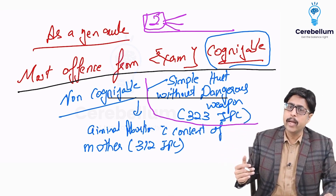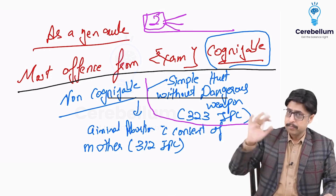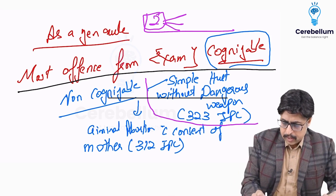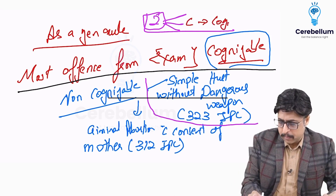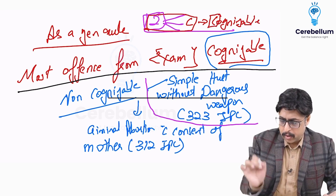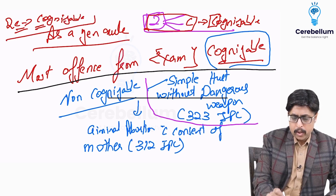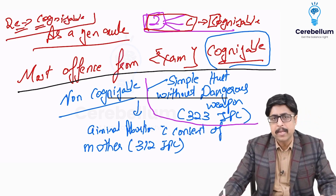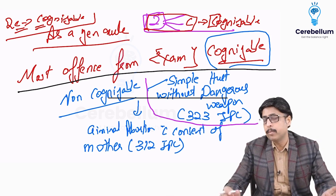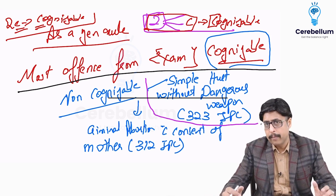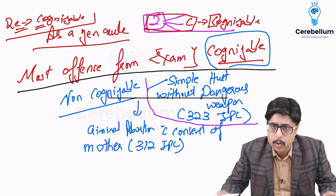In Section 2 CRPC, definitions are given under sub-sections labeled A, B, C, D, E, F, G, H — each covering something different. One easy mnemonic: Section 2C is for cognizable offense — 'C for cognizable.' In IPC and CRPC, we need to be smart and exam-oriented, making mnemonics and understanding what is important from the exam point of view.